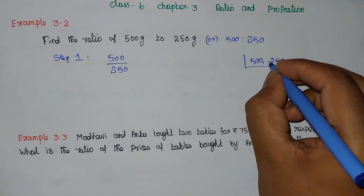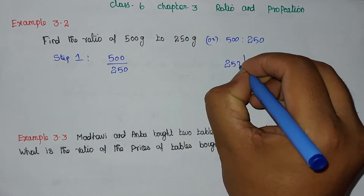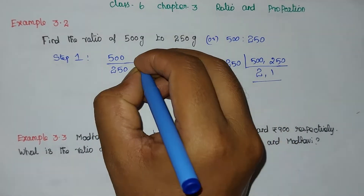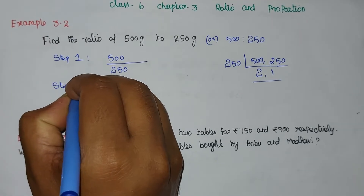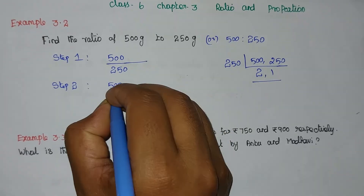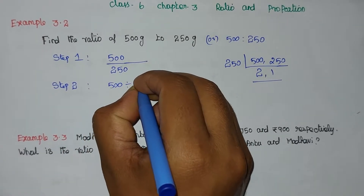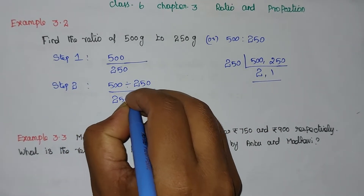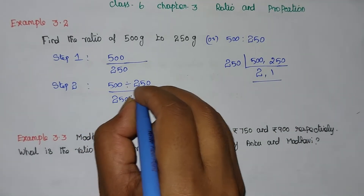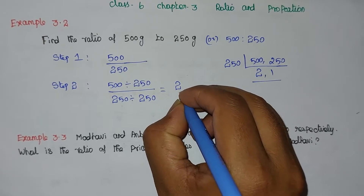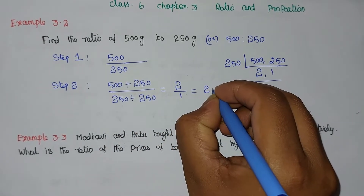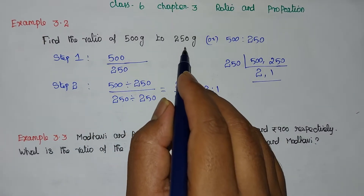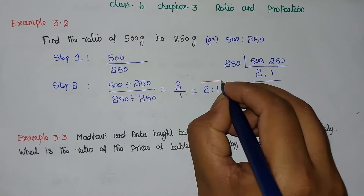Step 2: we divide 500 by 250, and 250 by 250. 250 divided by 250 gives 1, and 500 divided by 250 gives 2. So the simplest form of 500 gram to 250 gram is 2 is to 1.